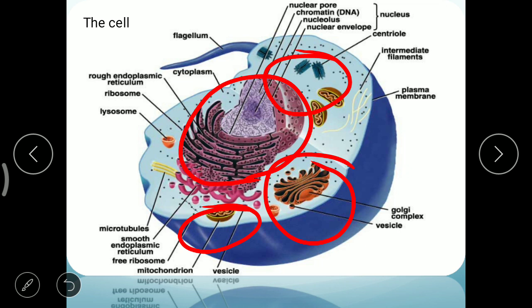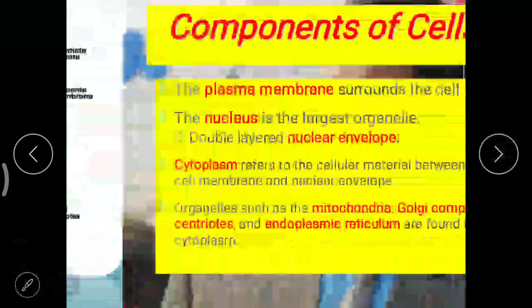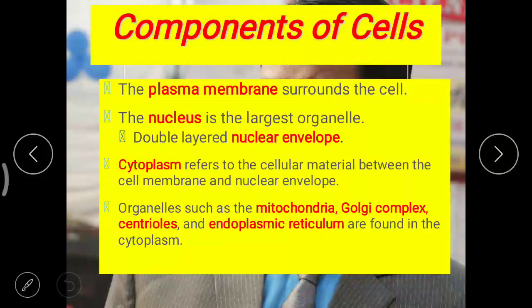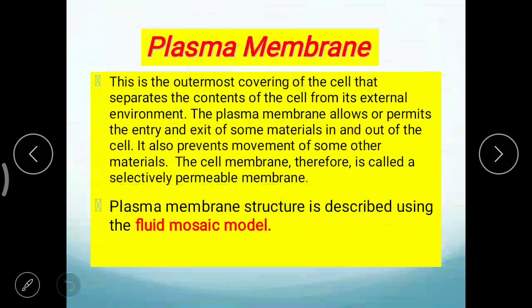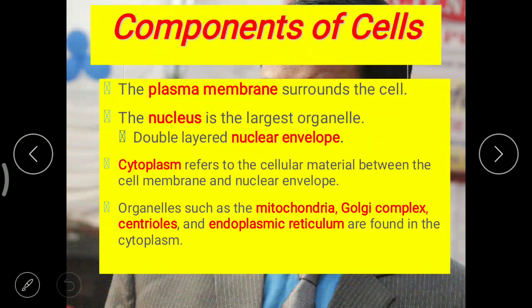Our first cell organelle is the plasma membrane — the first component of the cell. Next is the nucleus, which is also known as the brain of the cell.